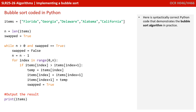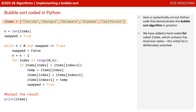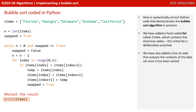Here is some syntactically correct Python code that demonstrates the bubble sort algorithm in practice. We've added a hard-coded list called items which contains five American states. This initial list is deliberately unsorted. We've also added a line of code that outputs the contents of the data set once it's been sorted, just so we can prove that it's worked.